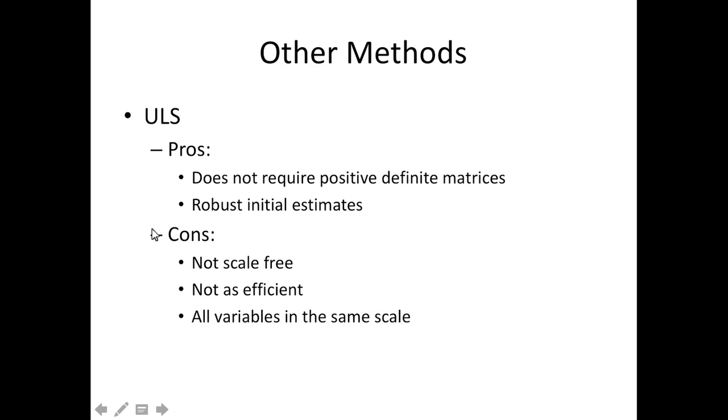So with unweighted least squares, the pro is that it doesn't actually require a positive definite matrix. What does that mean again? Remember that means that the matrix has to be invertible, it can't be singular. Each column has to be a separate thing. So essentially it doesn't require that your columns be perfectly unique.